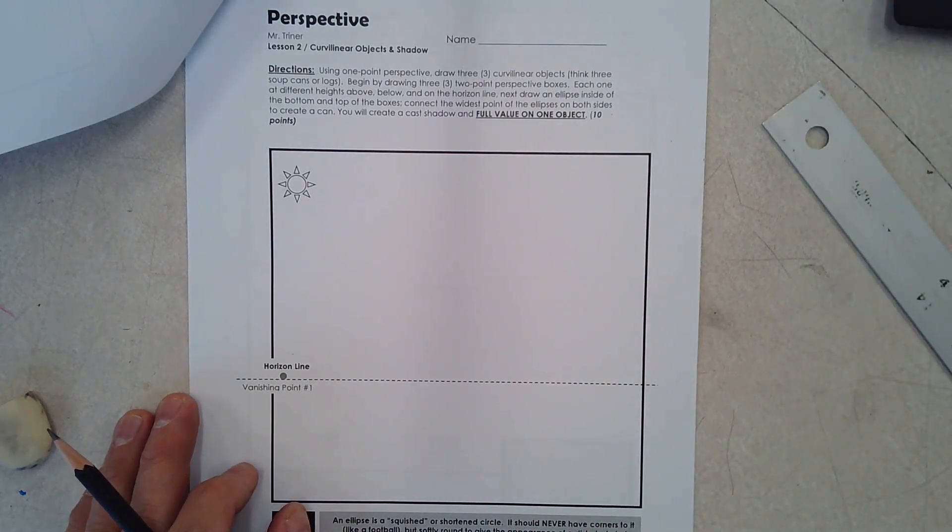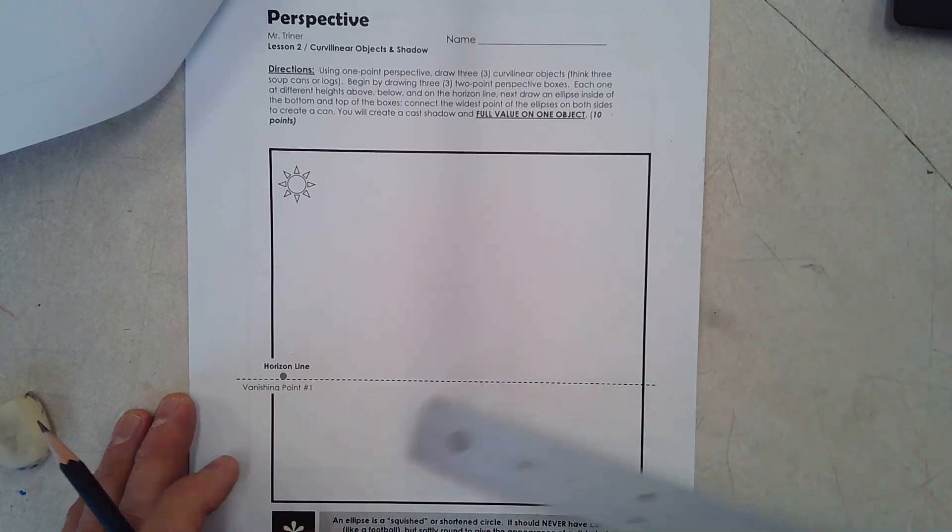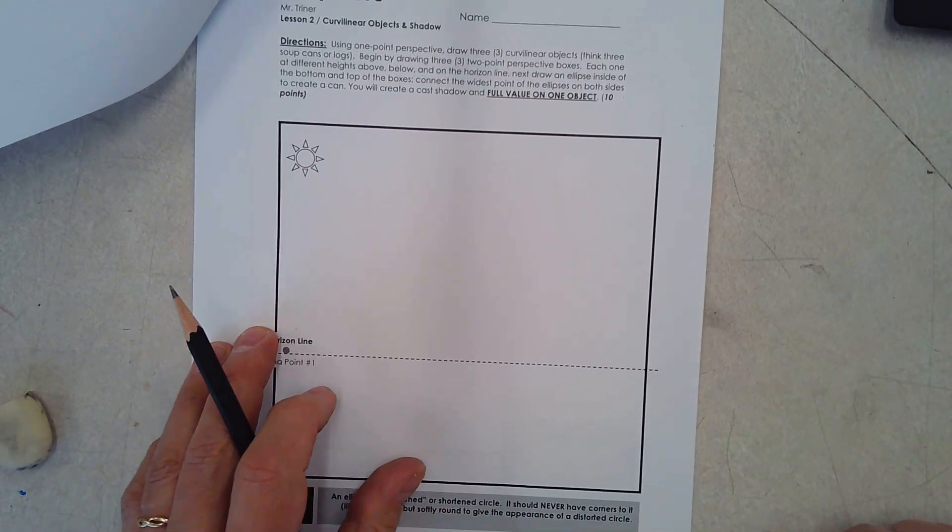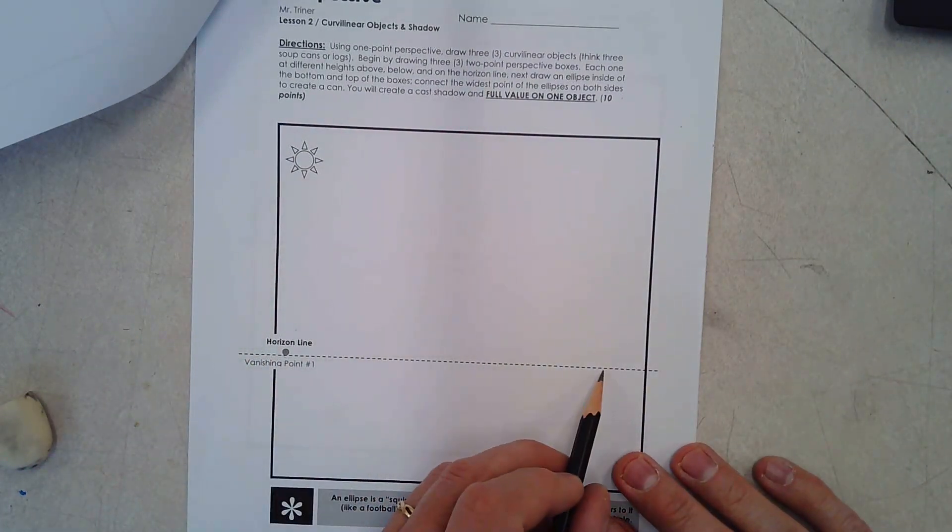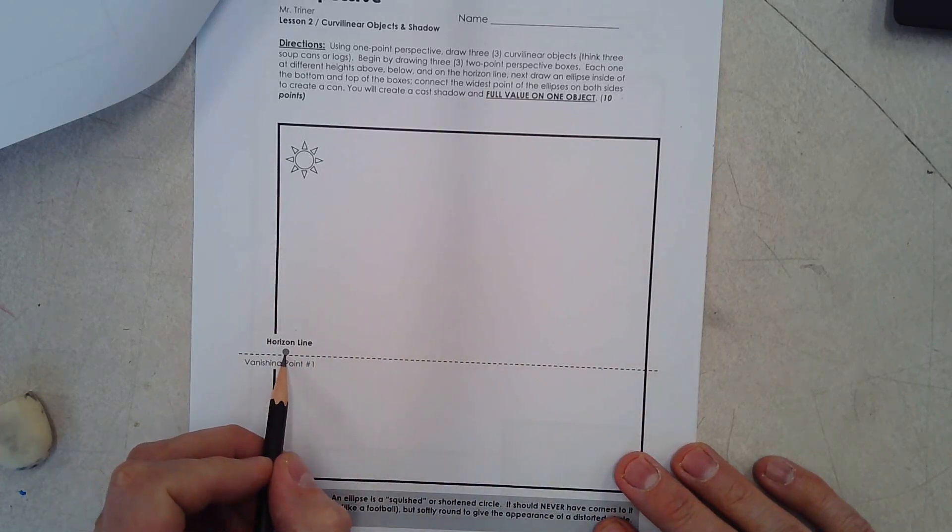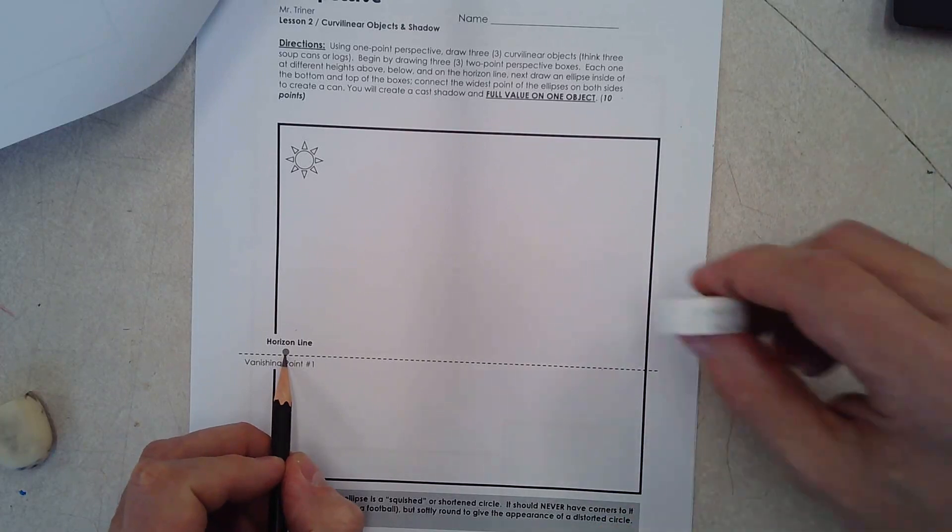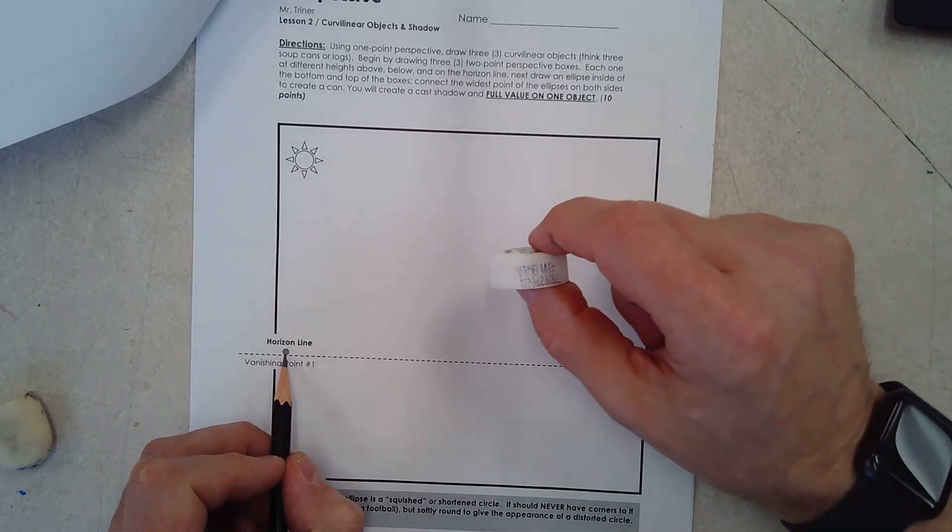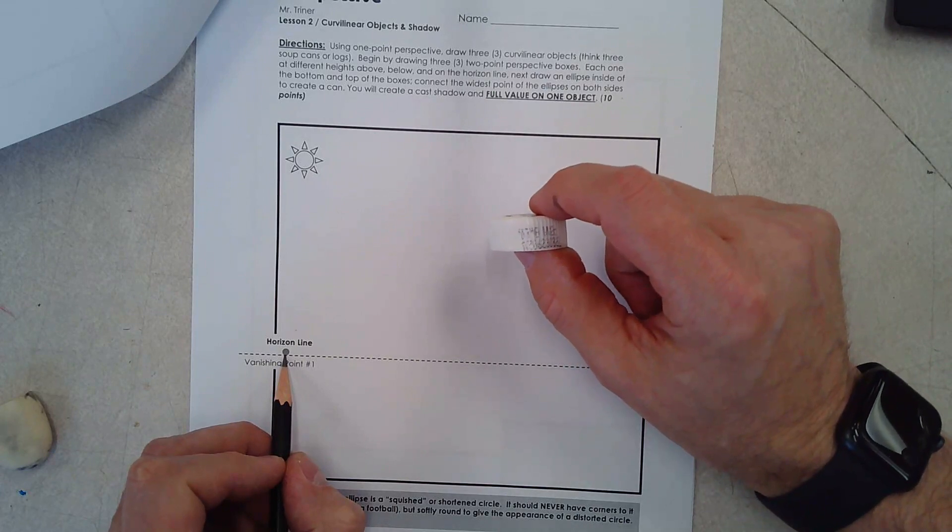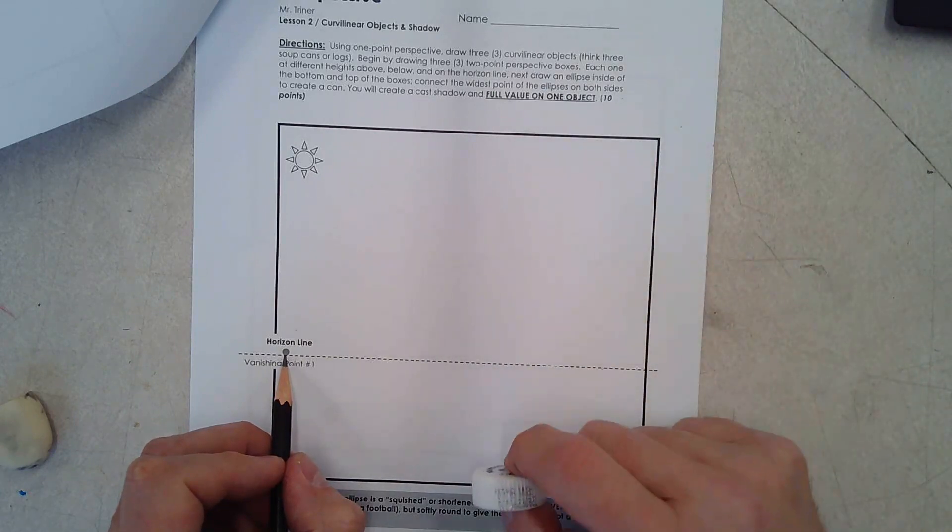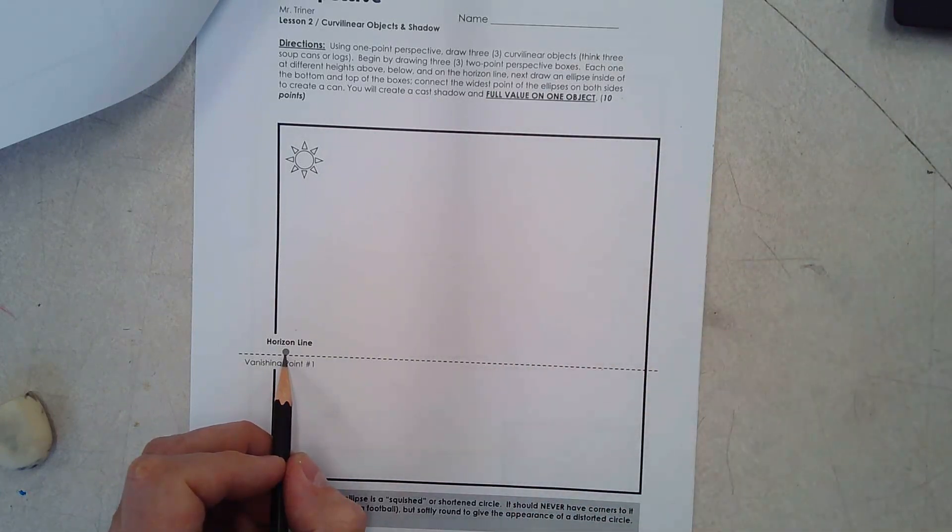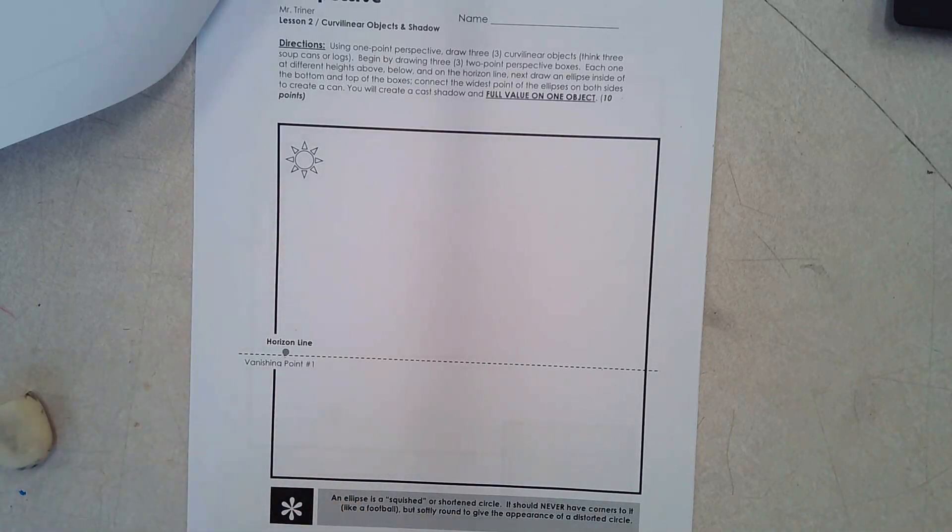It's not as difficult as you might think as long as you follow the tutorial. On the worksheet you were given, you'll notice there's a horizon line set up and a vanishing point set out far to the left side. We're going to draw three curvilinear objects: one way above the horizon line, one on the horizon line, and one way below the horizon line.